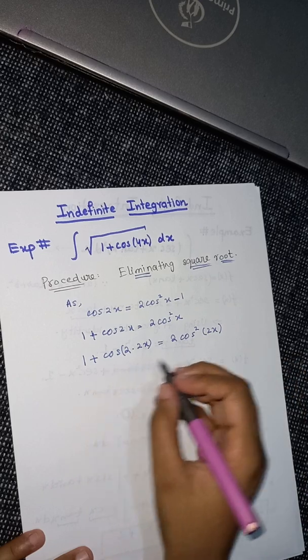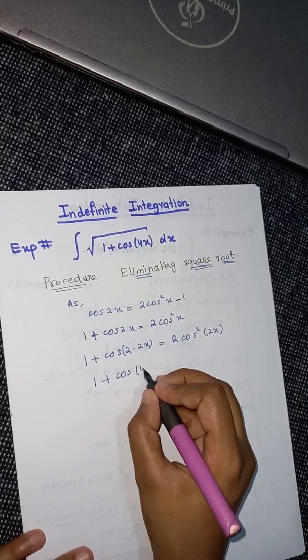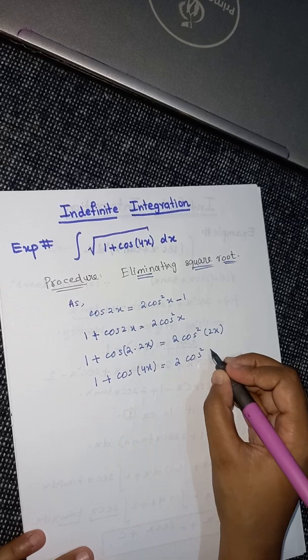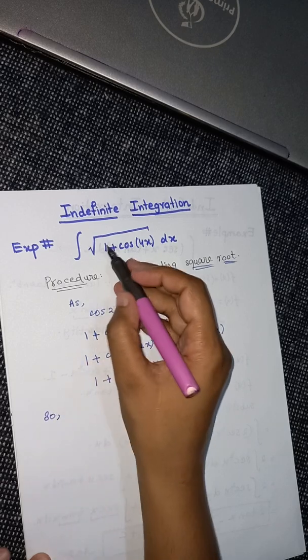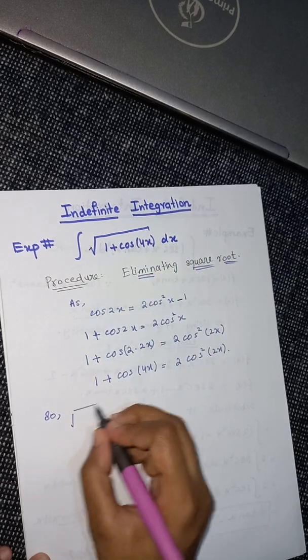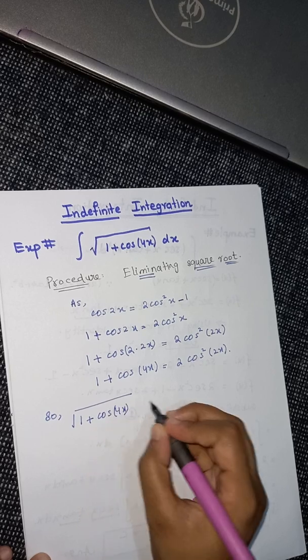Then I will get 1 plus cos 4x equals 2 cos squared 2x. We can write it as 1 plus cos 4x, and if I replace the value of this function with this one.